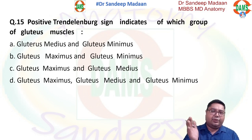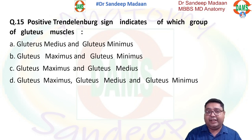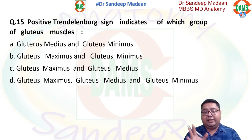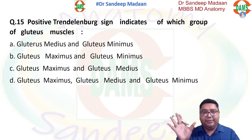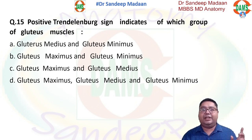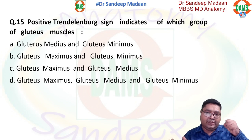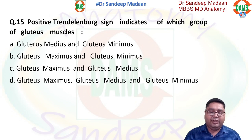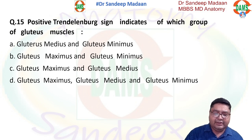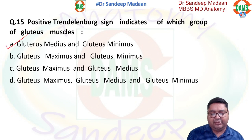Positive Trendelenburg sign: if you take the right foot off the ground, the right hip will drop. This is a positive Trendelenburg sign. The right-sided hip dropping means the left-sided muscles failed to prevent the fall — so this is the duty of gluteus medius and gluteus minimus. A will be the answer.